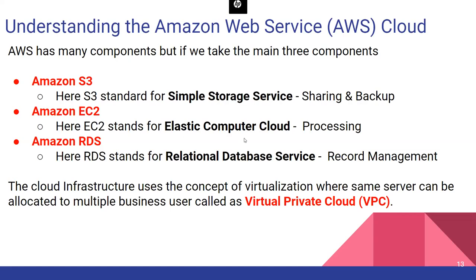EC2 stands for Elastic Compute Cloud — your computer system on the cloud. It's elastic, meaning if your home computer has 8 GB RAM but a program needs 32 GB, you can increase it anytime, and decrease it when not needed. Today you need 32 GB — you get it. Tomorrow you need only 2 GB — you reduce it. That's why it's called elastic. This processing power is achieved using EC2.